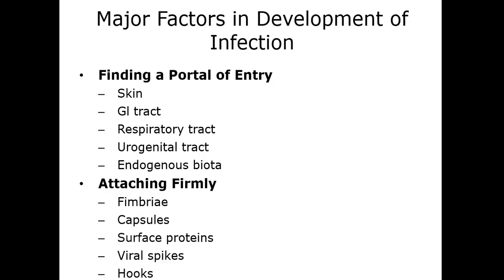Today we'll talk about how microbes get in — known as the portal of entry — and how they get out — known as the portal of exit. There are five major ways that microbes get in: the skin, the GI tract, the respiratory tract, the urogenital tract, and through indigenous biota. They attach through different mechanisms including fimbriae — those bristle-like projections — capsules such as the slime layer and glycocalyx, surface proteins, viral spikes for viruses, and hooks on parasitic worms like the tapeworm scolex, which uses hooks to attach to host tissues.